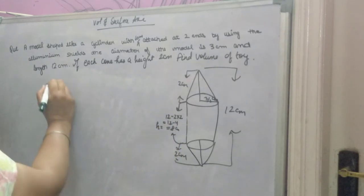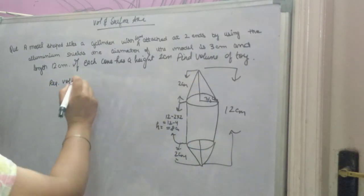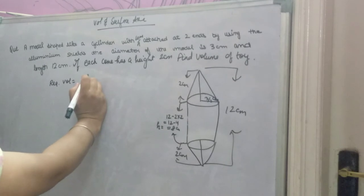Now, the required volume of this model will be the volume of the cylinder, that is pi r square h,